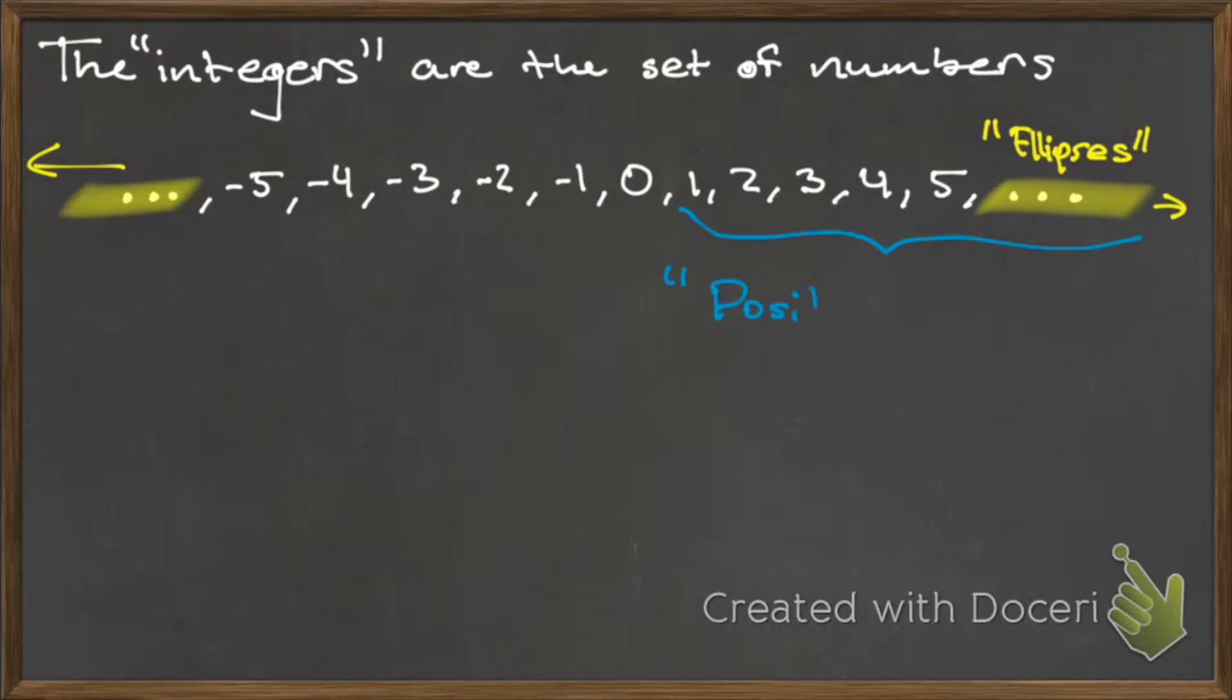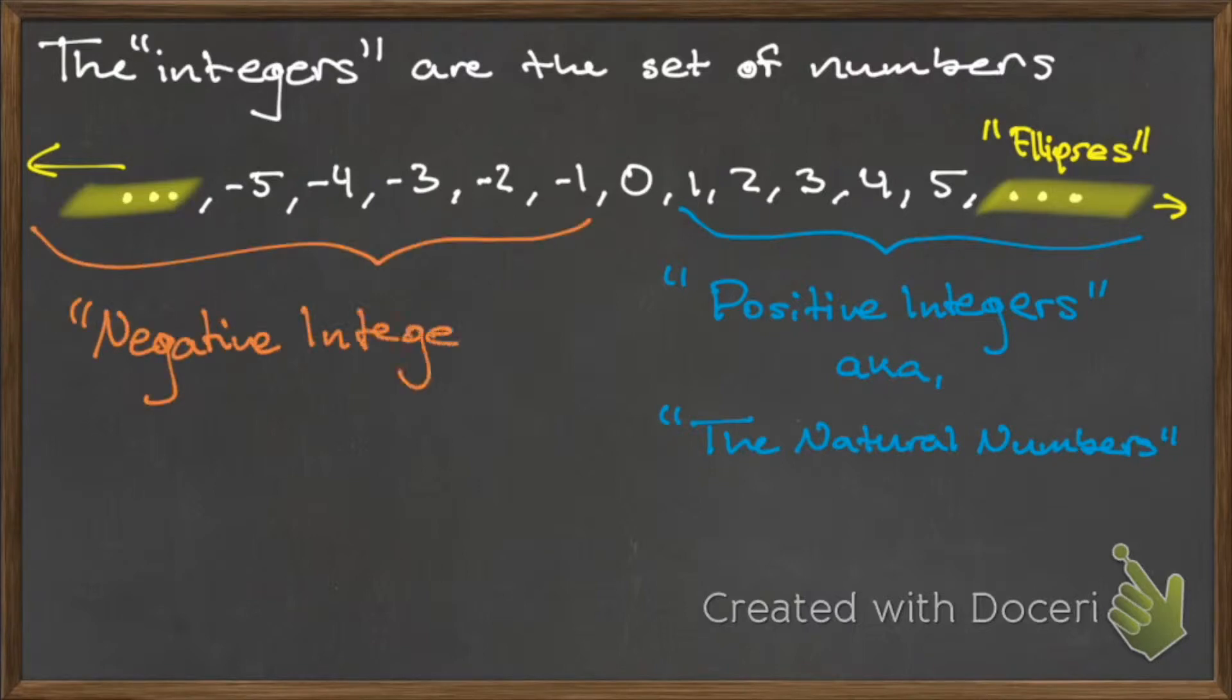The numbers to the right of zero are known as the positive integers and we actually give these numbers a special name. We call these the natural numbers. The numbers to the left of zero we call the negative integers and zero itself is neither positive nor negative.